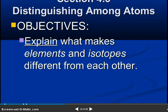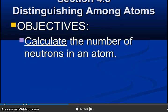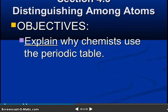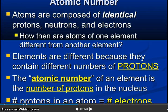So distinguish among atoms. What is the objective? Explain what makes elements and isotopes different from each other. Calculate the number of neutrons in an atom. Calculate the atomic mass of an element. Explain why chemists use the periodic table.